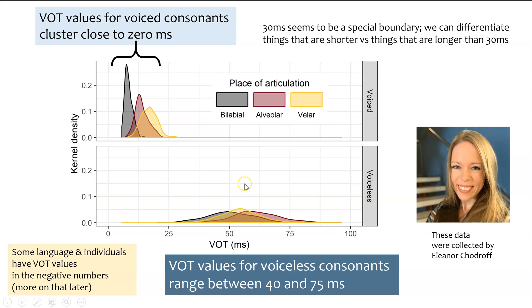So one thing that you'll notice in this graph and in graphs of other speech acoustic features is that 30 milliseconds seems to be a special boundary. Voice onset times tend to be either below 30 milliseconds for voiced sounds or above 30 milliseconds for voiceless sounds. Another part that's left out of this graph is that some languages and individuals demonstrate VOT values in the negative numbers. We'll talk about that a little bit later, but this is just to make sure that you know when you're looking at a plot like this, it's leaving out some of the productions by some individuals.